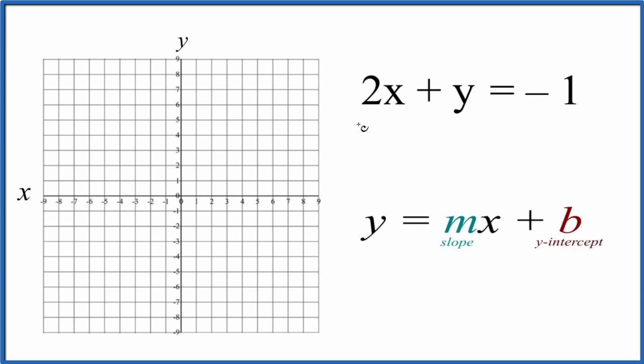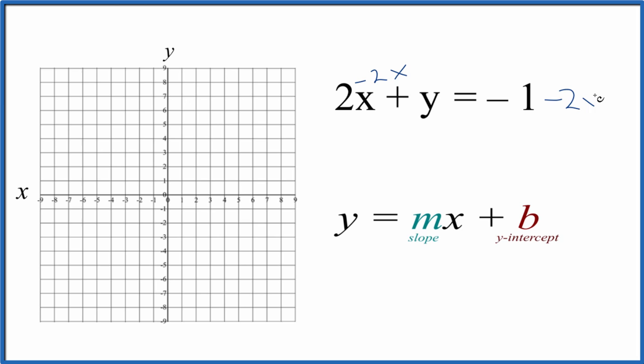Let's graph the linear equation 2x plus y equals negative 1. We'll use slope-intercept form to do that. So we need to get y by itself. Why don't we subtract 2x from both sides? That'll give us y equals negative 2x minus 1. I wrote the 2x first here because I want it to be in slope-intercept form.